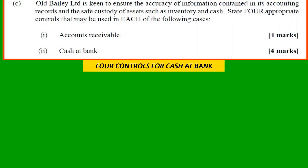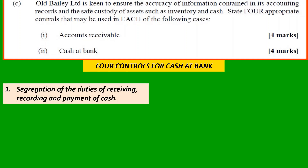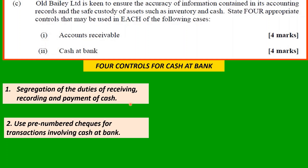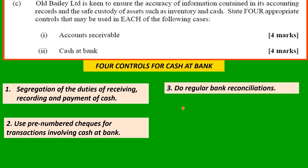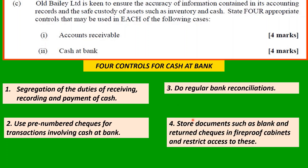Four controls for cash at bank. One: segregation of duties for receiving, recording, and payment of cash — separate custody from recording. Two: use pre-numbered checks for transactions involving cash at bank, allowing you to chase every check drawn on your bank account. Three: do regular bank reconciliations. Four: store documents such as blank checks and returned checks in fireproof cabinets and restrict access to them.